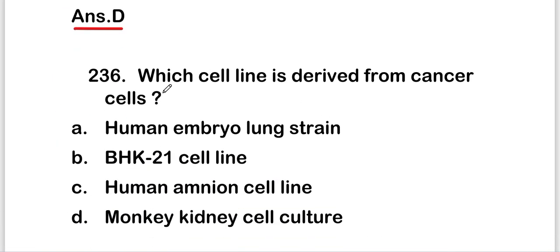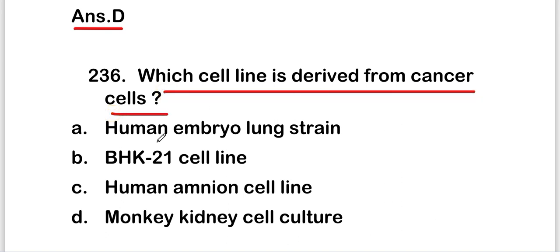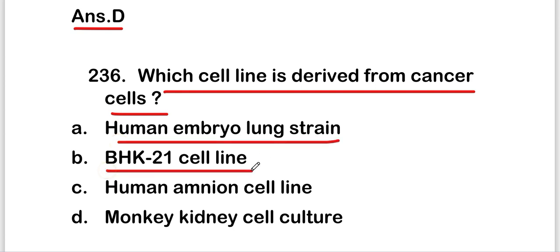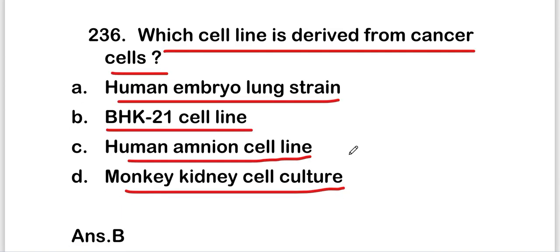The next question: which cell line is derived from cancer cells? Options are human embryo lung strain, BHK-21 cell line, human amnion cell line, or monkey kidney cell culture. The right answer is option B — BHK-21 cell line is derived from cancer cells.